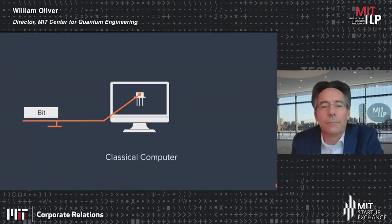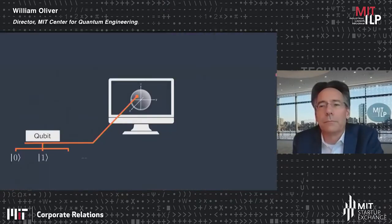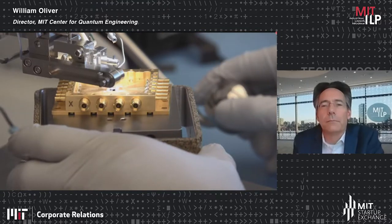Quantum computers are not just smaller, faster versions of classical computers — they're fundamentally different. We're in the digital computer world of a bit, which is one basic element of information — it's a zero or a one and nothing else. In a quantum computer, you can have a quantum bit, or qubit, that's in a superposition of zero and one. We can design it, control it — we're actually engineering and manipulating quantum mechanics.